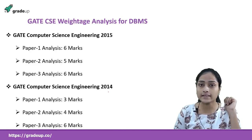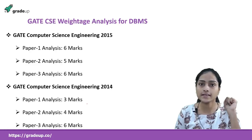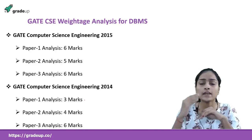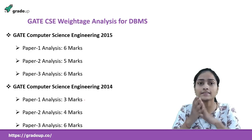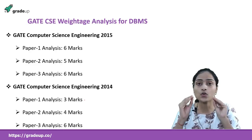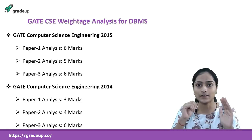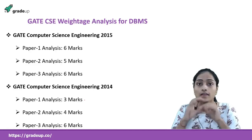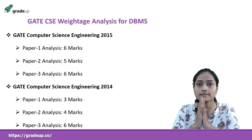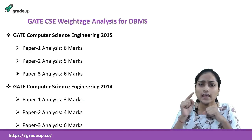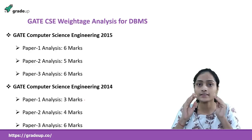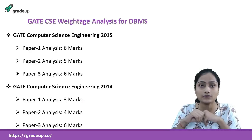In GATE 2014 for CSE, Paper 1 was 3 marks, Paper 2 was 4 marks, and Paper 3 was 6 marks. On average, this subject is asked for about 6 marks, and 6 marks can be a game changer in your GATE examination. This subject is quite conceptual and very easy to understand if you study it sincerely. You have to grab all of these 6 marks — you are not going to lose even a single mark on this subject, which is possible.